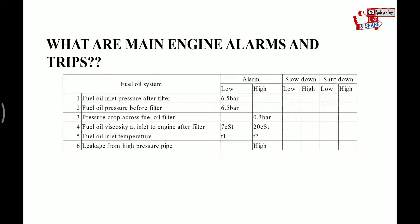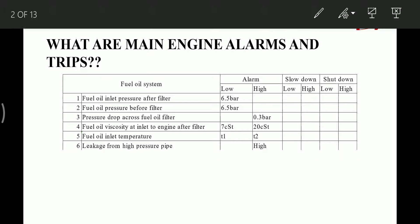The alarms and trips provided in the fuel oil system: first, fuel oil inlet pressure after filter — its low-low alarm set value is 6.5 bar. Fuel oil pressure before filter — low-low alarm is again 6.5 bar. Pressure drop across filter gives a high alarm at 0.3 bar.